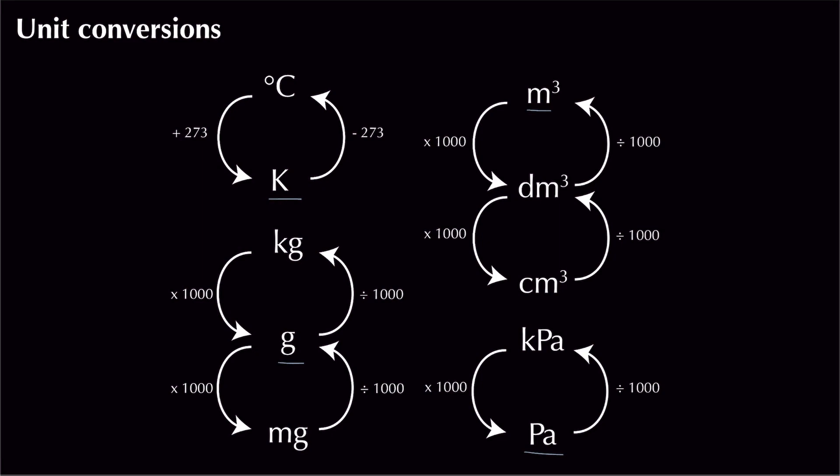All of these unit conversions pretty much involve dividing or multiplying by a thousand. I always remember: if the unit is getting bigger — say going from decimetres cubed to metres cubed — then the number is actually going to get smaller.